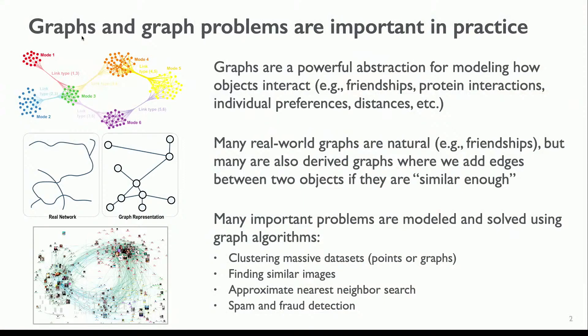Today I want to tell you about some of the work we've been doing on building practical graph representations — it's a continuation of the talk that Helen gave yesterday. Graphs give us a way of representing connections and relationships between objects. A lot of the graphs we think about in practice are natural graphs, coming from friendships or road connections. But there are also other kinds of graphs where the notion of being connected is whether two objects are similar enough, perhaps from a machine learning model where you embed points in space and connect two objects if they're within distance epsilon of each other.